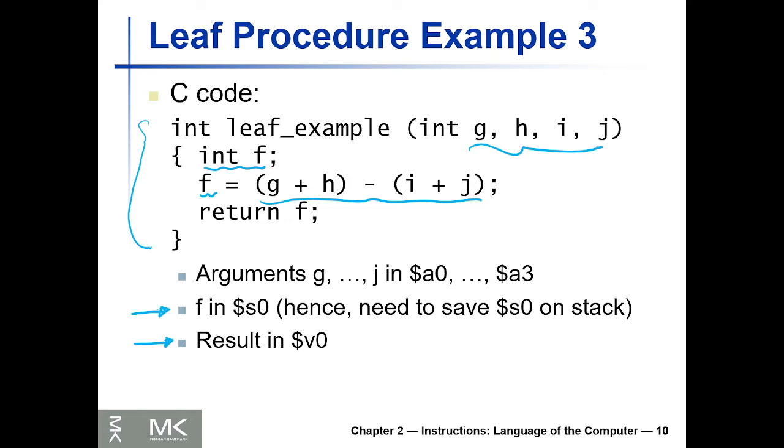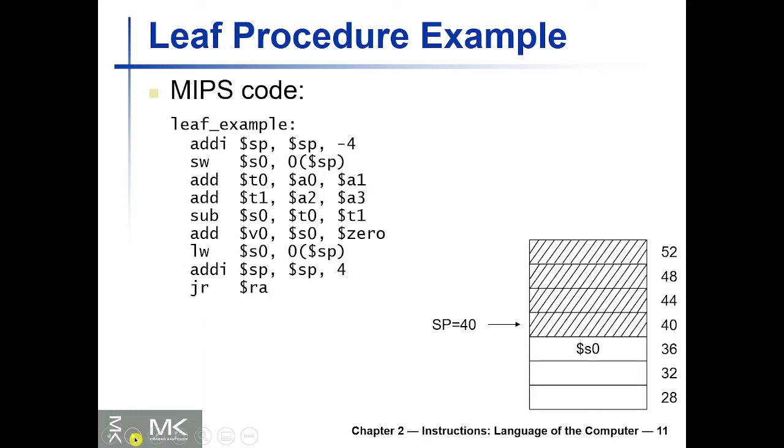We're going to calculate this math calculation in register S0, then copy S0 into v0, and return v0. Let's see how we're going to do this. This is the situation before we execute any line in the leaf example, or this is basically the label here which is the function name.